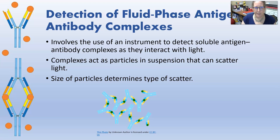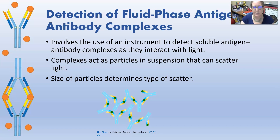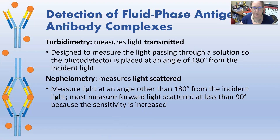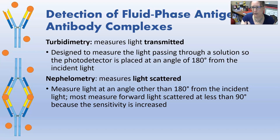Next we have the detection of fluid phase antigen-antibody complexes. It involves the use of an instrument to detect soluble antigen-antibody complexes as they interact with light. Remember we're unlabeled — we don't have labels, though a lot of these soluble reactions tend to have labels. The complexes act as particles in suspension, and those particles can scatter light. The size of the particles will determine the type of light scatter. There are two ways to measure it: turbidimetry measures the light transmitted through the cuvette. The more antigen-antibody complexes are forming in the liquid, the more turbid the cuvette becomes and the less light is transmitted.